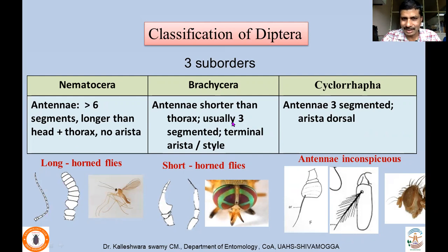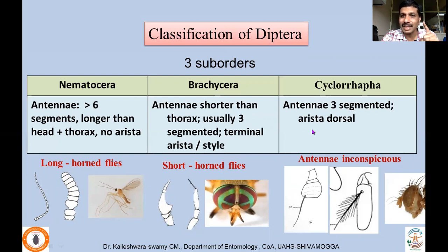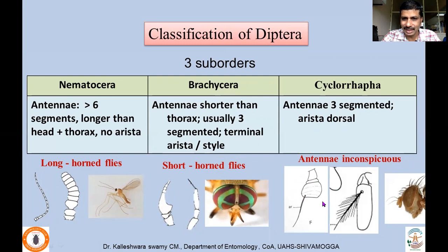Brachycerans have shorter, three-segmented antennae with a style-like or finger-like structure on the flagellum — either arista-type or style-like. Cyclorrhapha also have short, three-segmented antennae like Brachycera, but here the arista arises from the dorsal region of the flagellar segment and may be bare or feathery. That is how we can differentiate these three suborders in the adult stage.